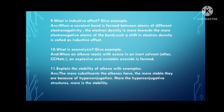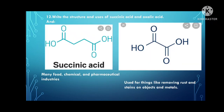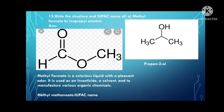Write the structure and uses of succinic acid and oxalic acid. Succinic acid is used in the food, chemical, and pharmaceutical industries. Oxalic acid is used for removing rust and stains from objects and metals.